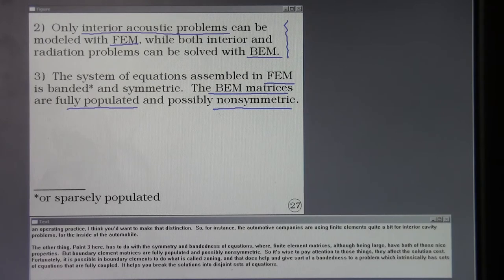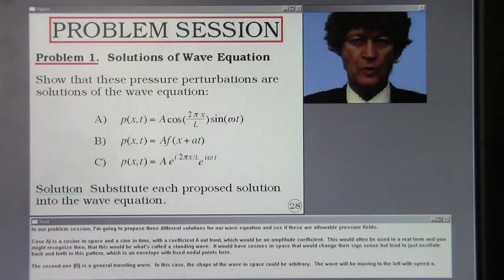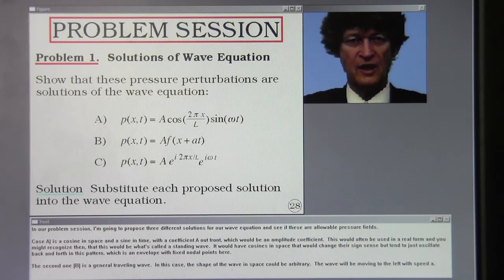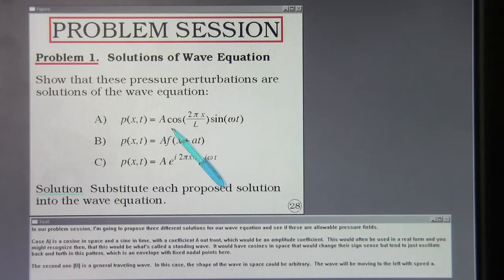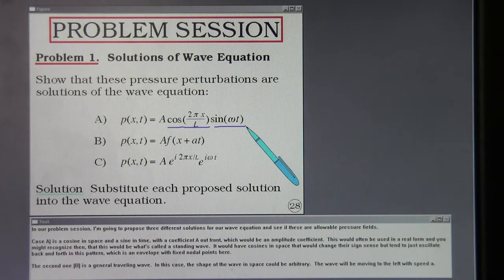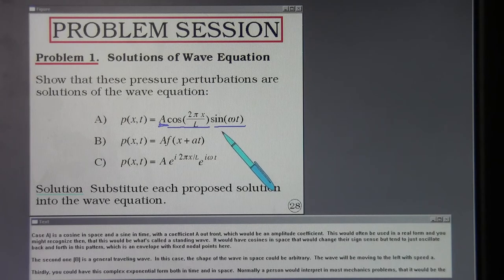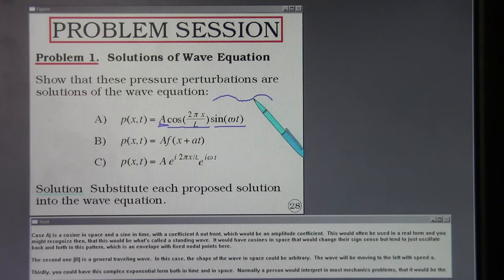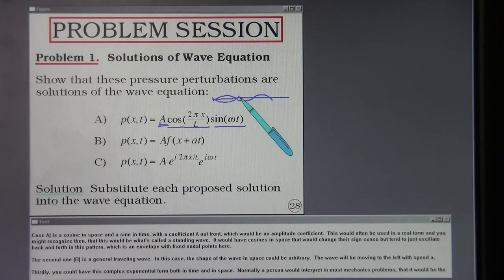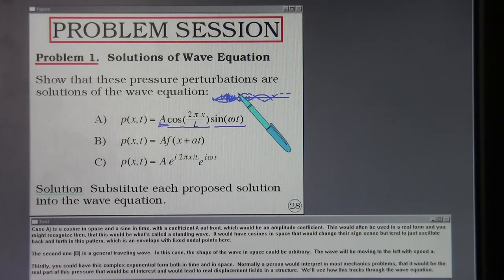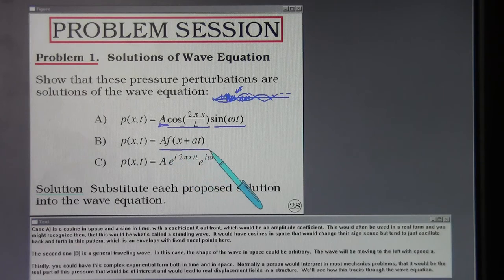In our problem session, I'm going to propose three different solutions for our wave equation and see if these are allowable pressure fields. Case A is a cosine in space and a sine in time with a coefficient A out front which would be an amplitude coefficient. This would often be used in a real form and you might recognize then that this would be what's called a standing wave.